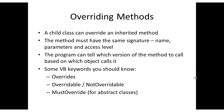A child class can override an inherited method. The methods have to have the same name for it to be overridden. The program can tell which version of the method is actually being called based on which object calls it. So if two different objects are from different classes and have the same method, it'll know based on the object which method it's running.